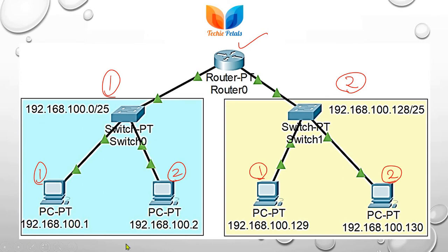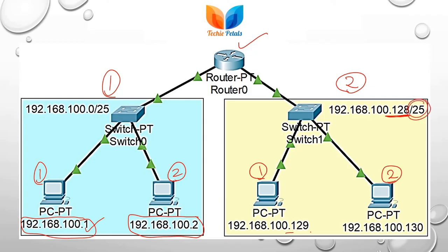We need to assign IP addresses to every host in sequence — only consecutive addresses within each subnet. For the first system in the first subnet we assign host address .1, and for the second system we assign .2. The network address is the same for all hosts connected within that subnet. For the second subnet with network ID .128, the first host gets .129 and the second host gets .130.